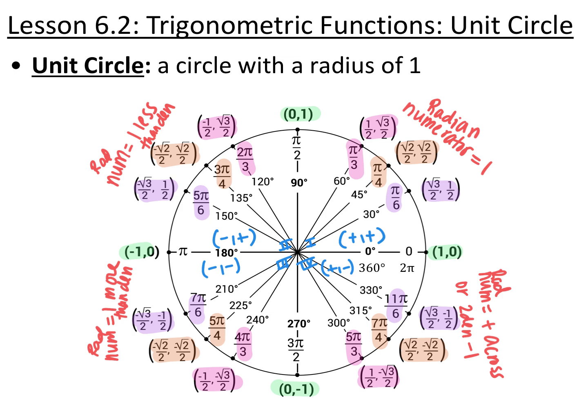The x and y coordinates for quadrantal angles are 0, 1, or negative 1. For the rest, they are either 1 half, root 2 over 2, or root 3 over 2. If you're closest to the x-axis, your x-coordinate is bigger: root 3 over 2 and 1 half. If you're closer to the y-axis, y is bigger: 1 half and root 3 over 2. In the middle, both are root 2 over 2. Signs follow the quadrant: both positive in Q1, negative-positive in Q2, both negative in Q3, positive-negative in Q4.